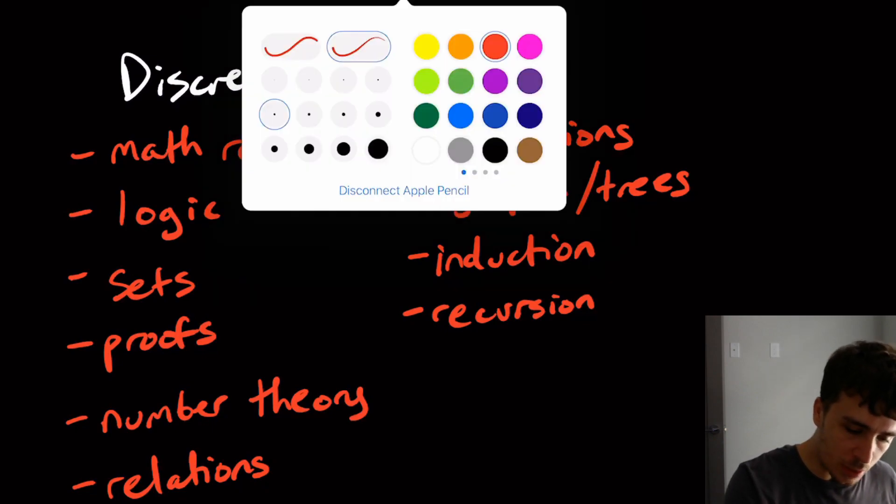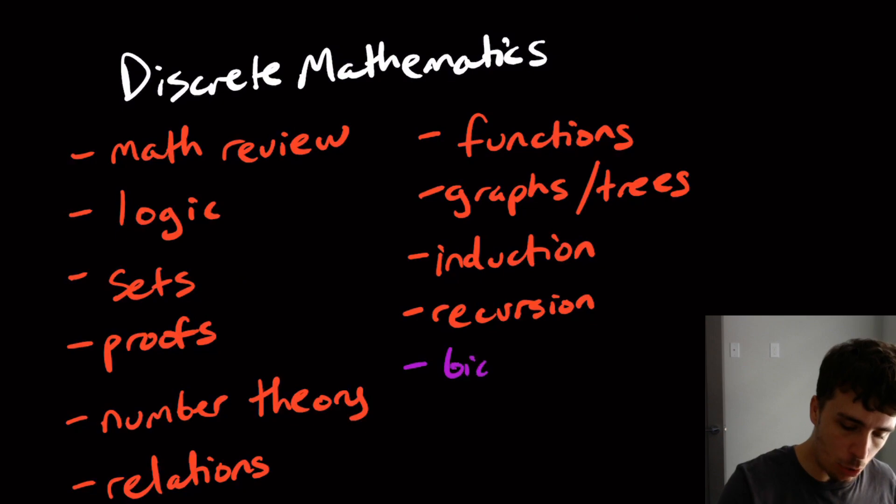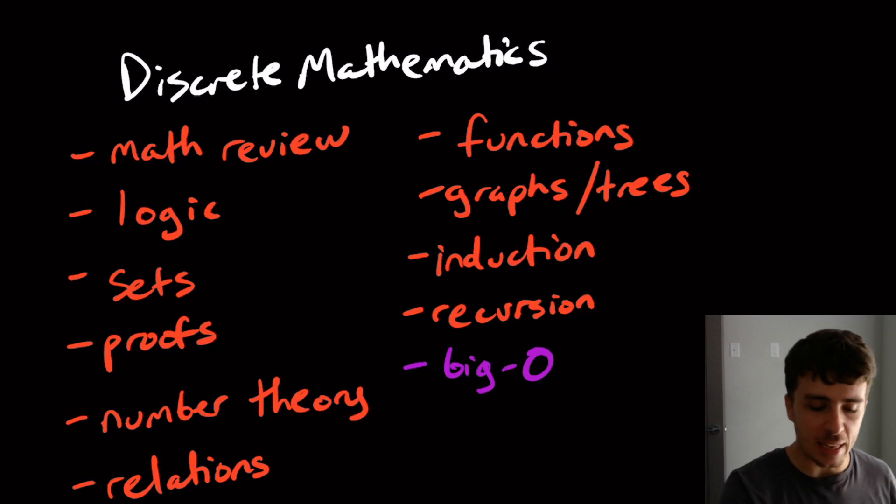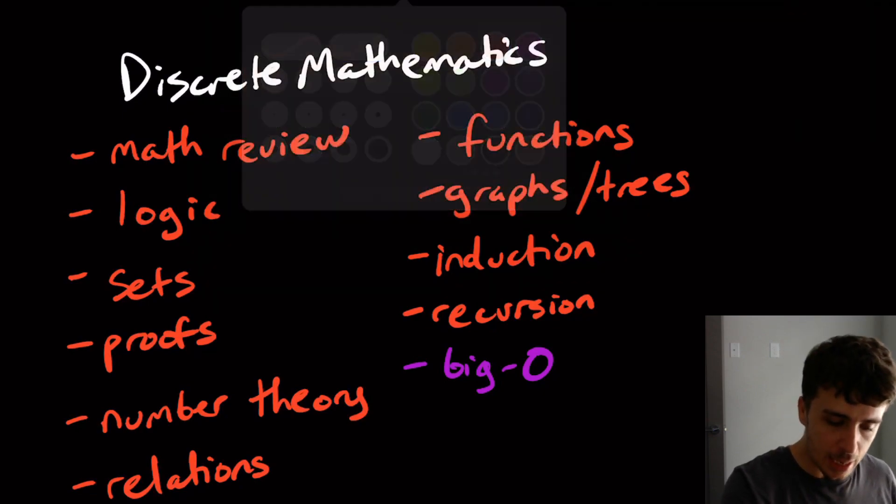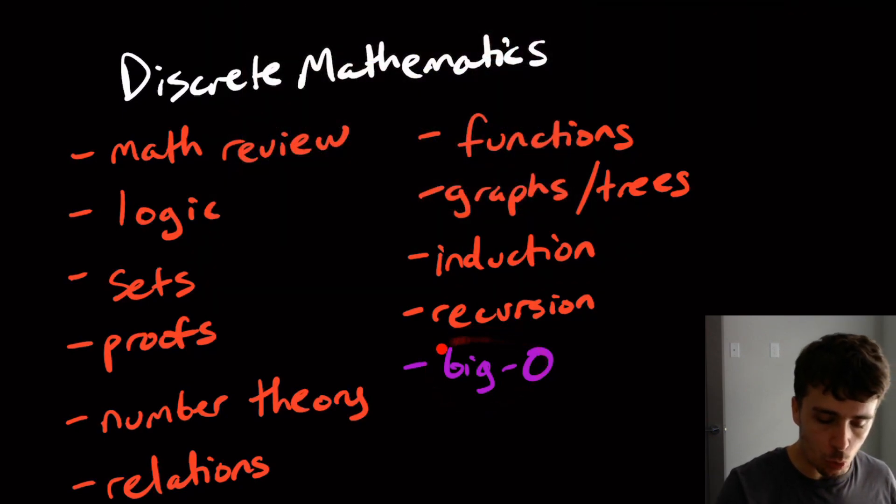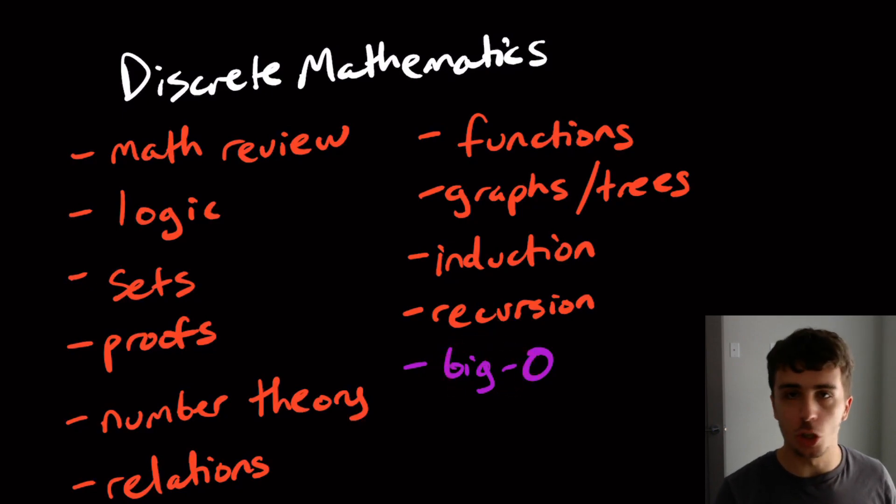A really important section is big O, probably the most important section on here for a lot of you because many of you are taking exams like the GATE exam. You need to be able to work with big O notation, and so many people misunderstand what big O is.